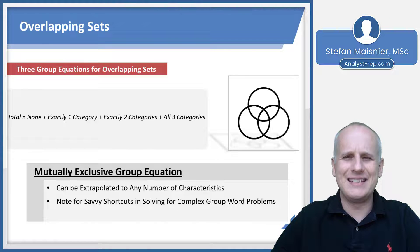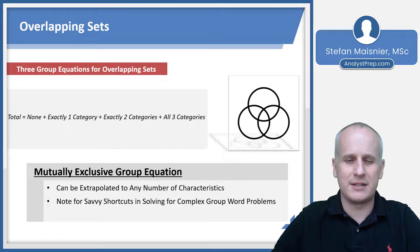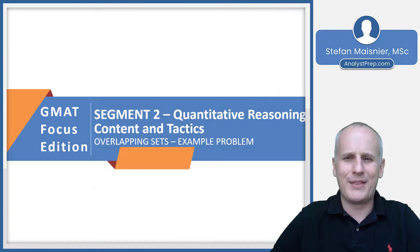And this is a really savvy shortcut for some of the more complex group word problems, because you'll see all of the different iterations and think, how do I get there? This seems like it's going to take forever. So with that, let's move on over to the whiteboard and actually see this mutually exclusive group equation in action. So you can use it with your practice of overlapping sets on the quantitative reasoning section.